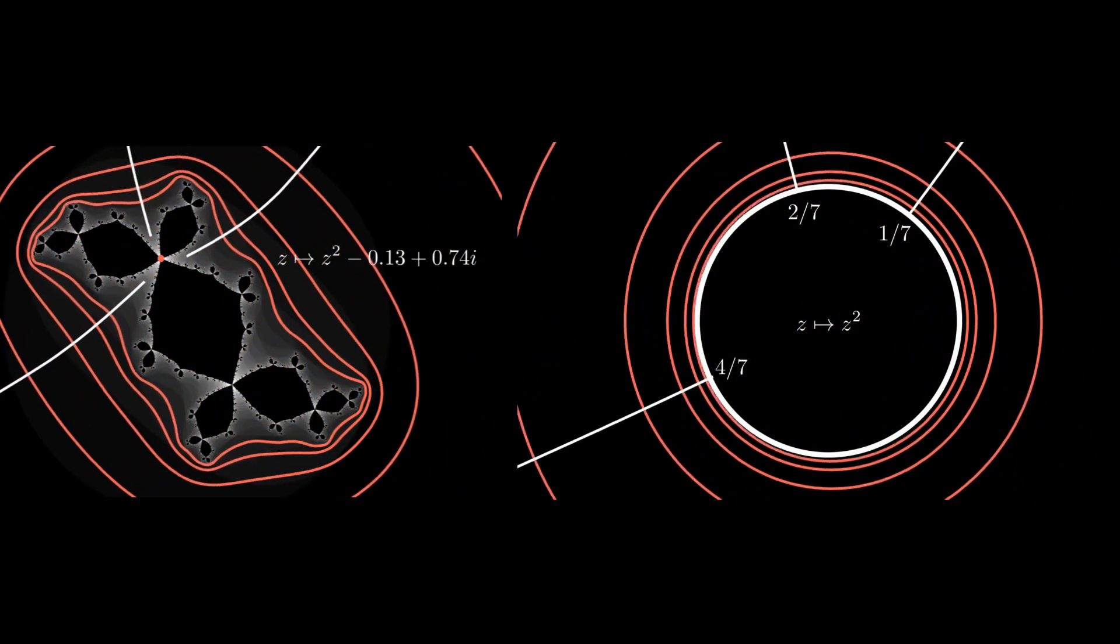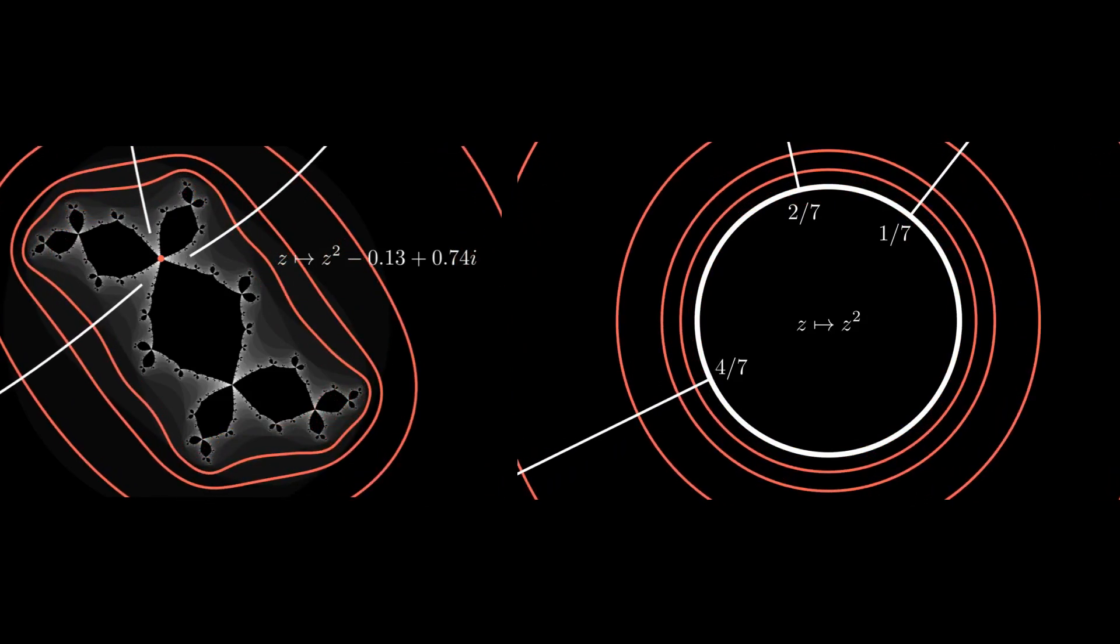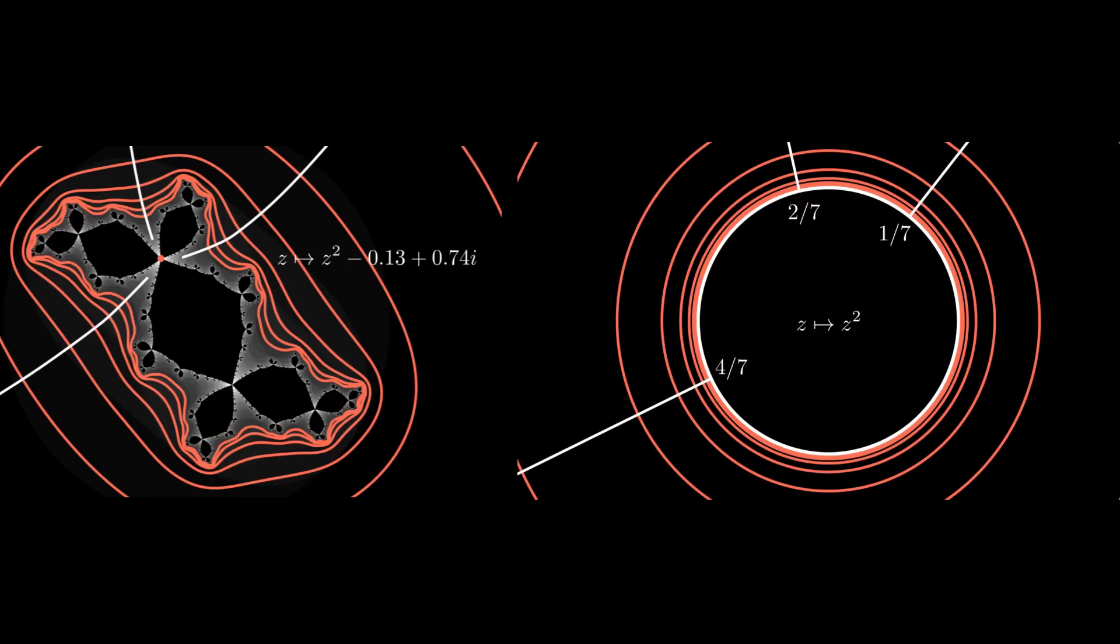Here, the rays happen to be at angles 1/7th, 2/7th, and 4/7th, if we measure angles between 0 and 1 instead of degrees or radians.